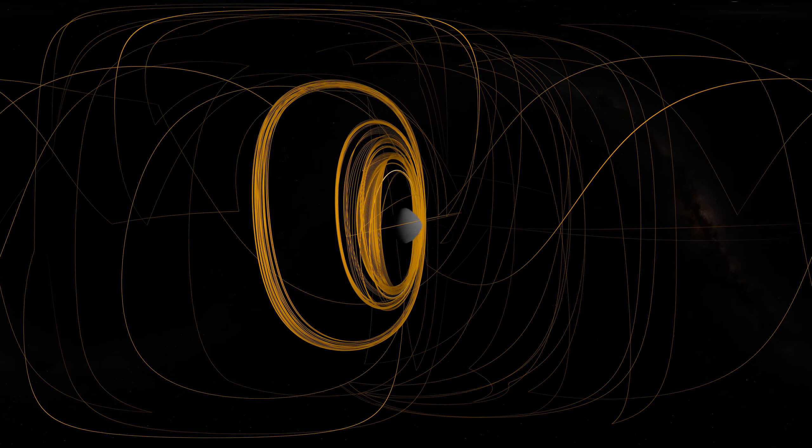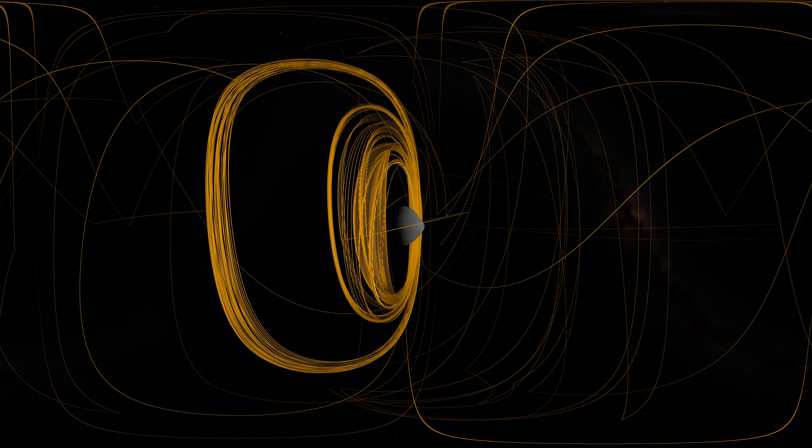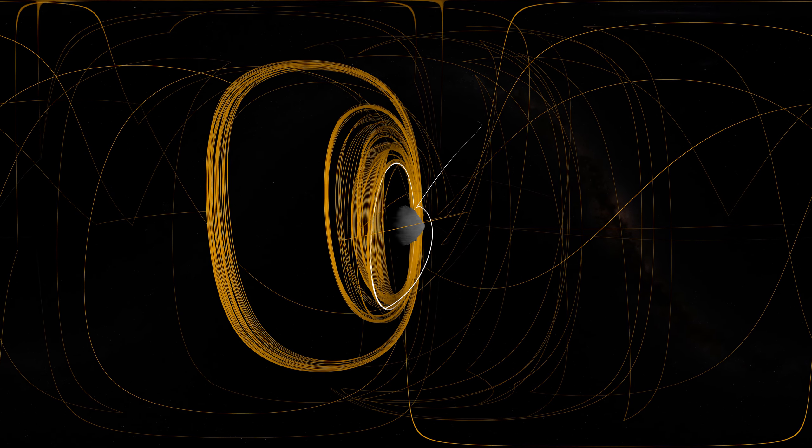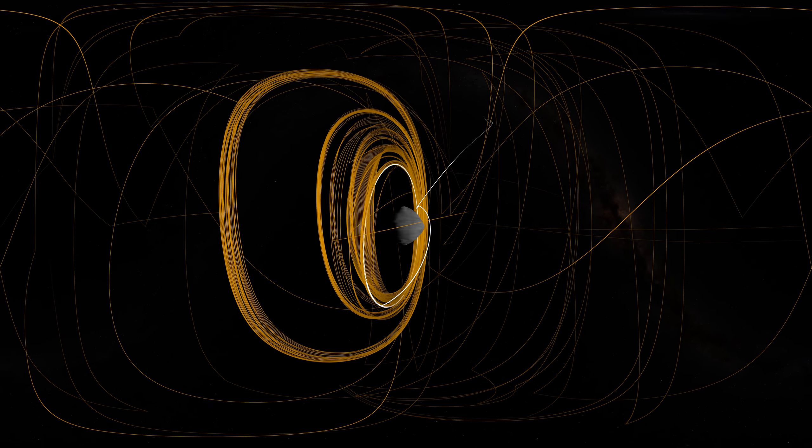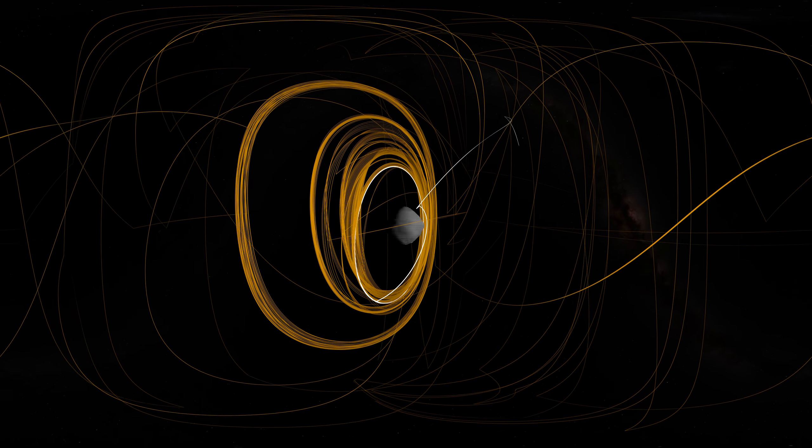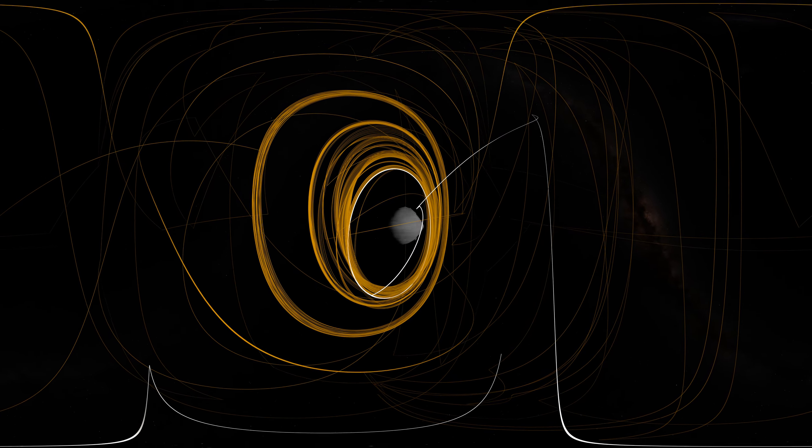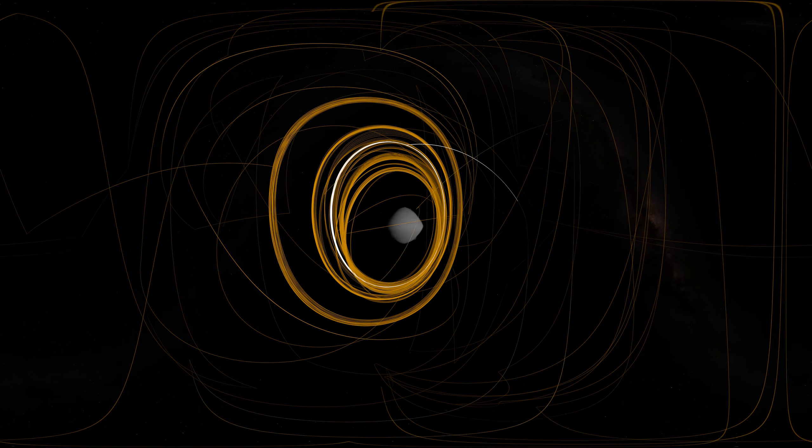In mid-April, OSIRIS-REx performed the first of two rehearsals prior to sample collection. It navigated to a predetermined checkpoint about 125 meters above Bennu, then descended to within 65 meters before backing away.